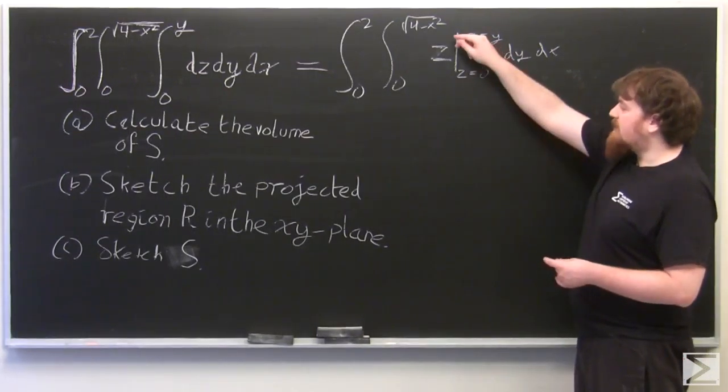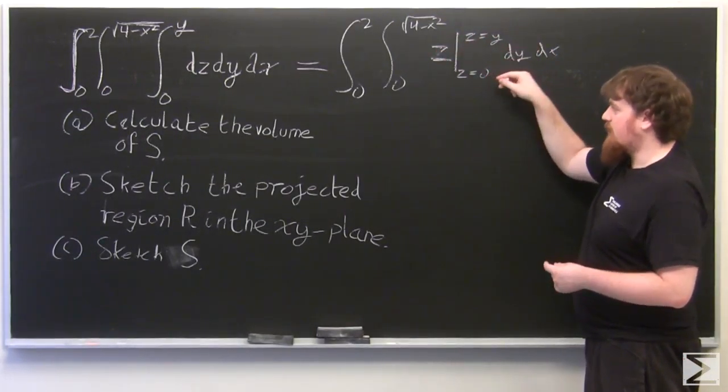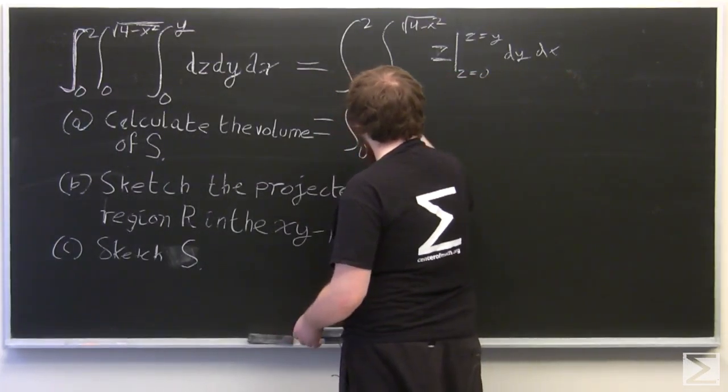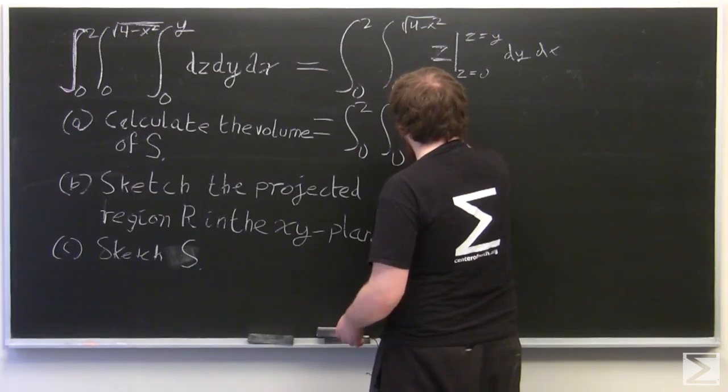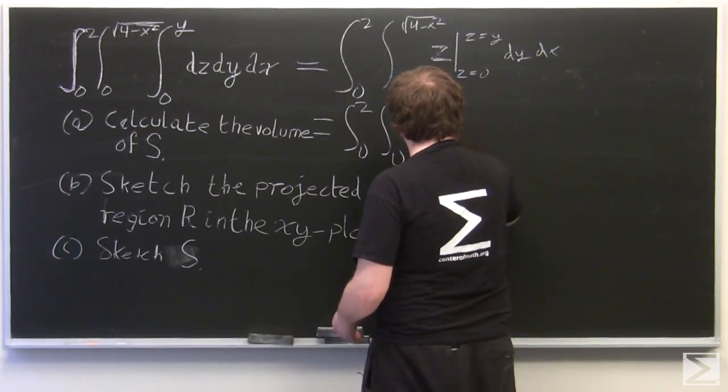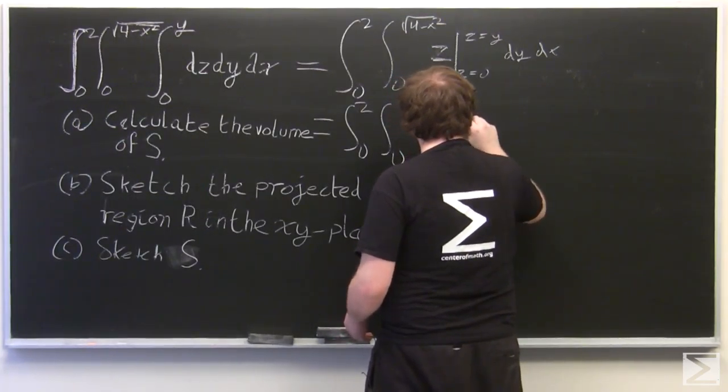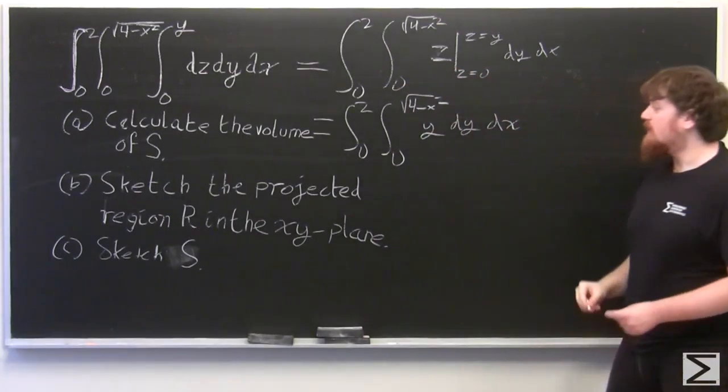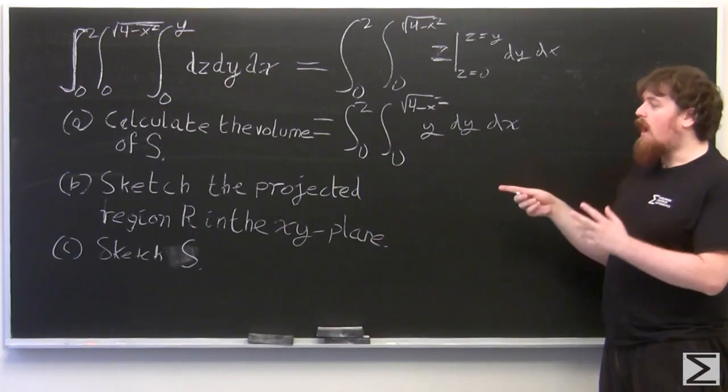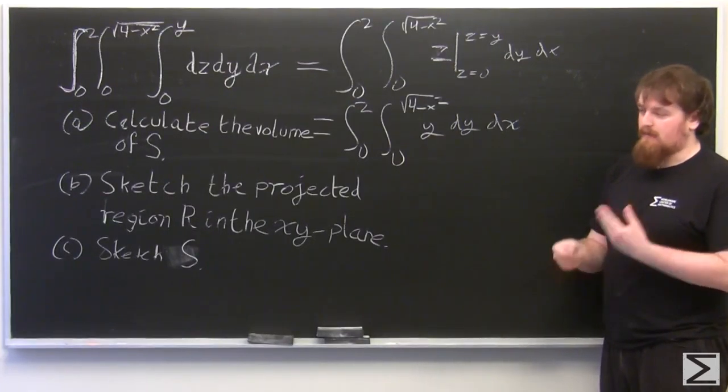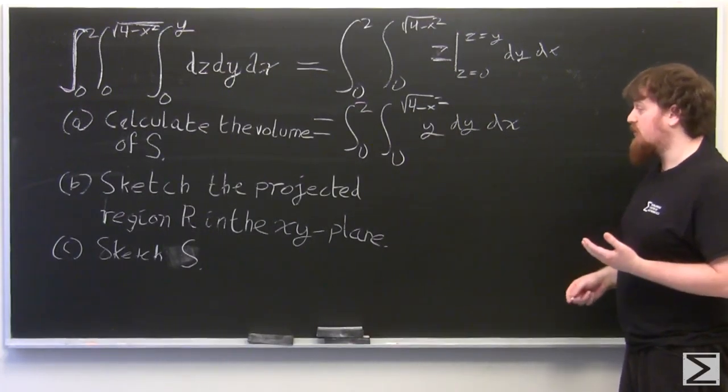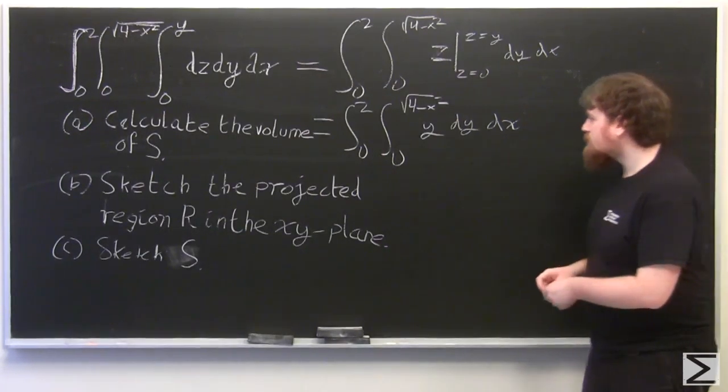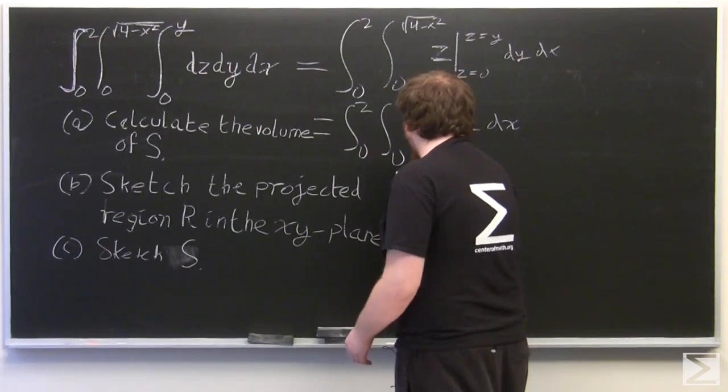And so then, this becomes y minus 0, and so we just have y. And so here, we integrate y, and by the opposite of the power rule for differentiation, we get that y integrates to y squared over 2.